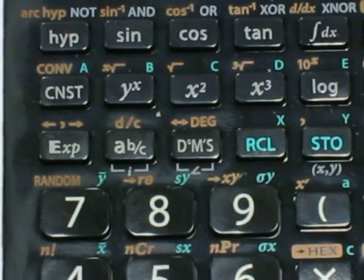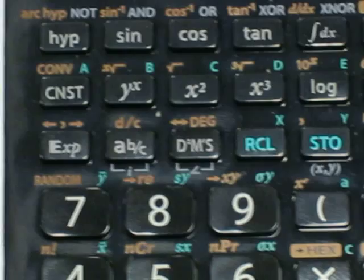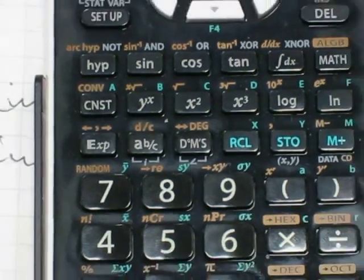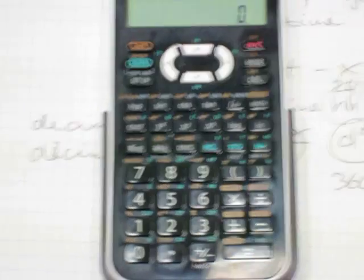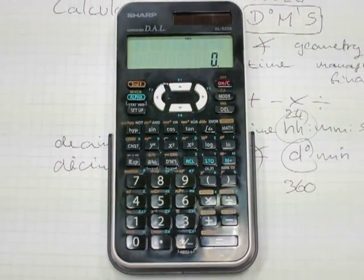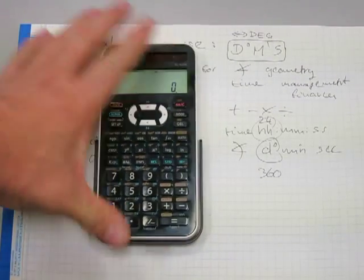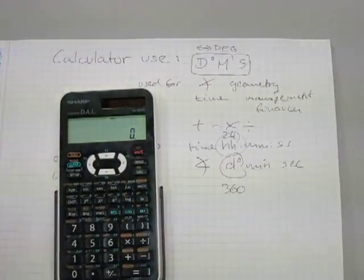It converts from degree, minute, and second format to decimal degrees, but it's also used with time. This function in the calculator is good either for calculating angles in geometry or calculating time in management and finances.